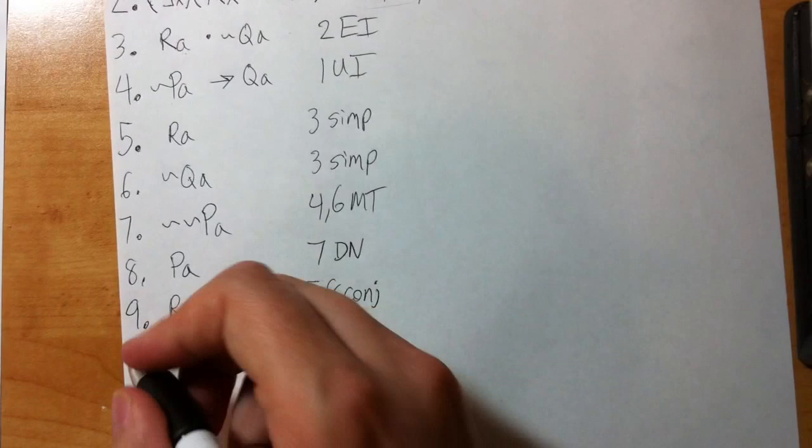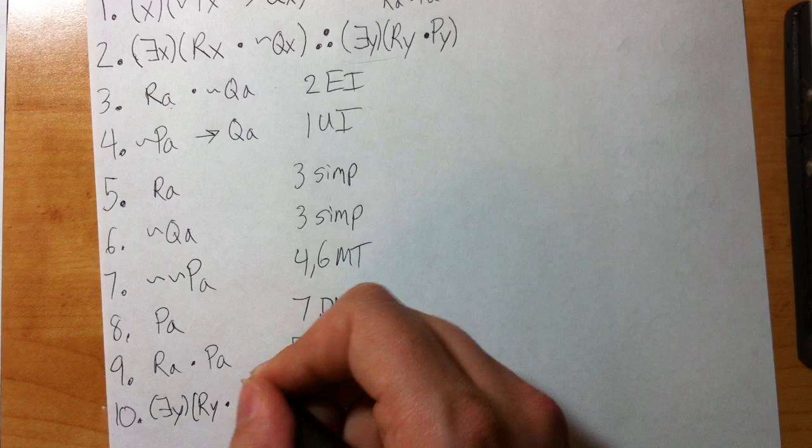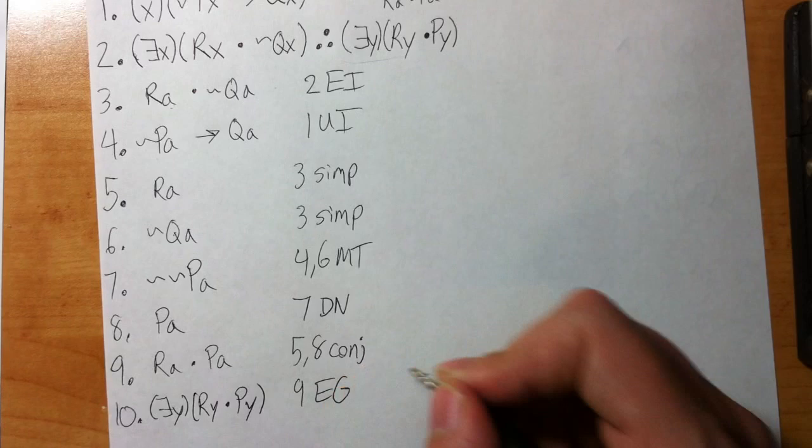So now I can write, to get that instance: Ra dot Pa, and that's line five and eight conj. And so now, using EG, I can finally get my conclusion. You can pick any variable you want, but again, I pick y because that's the one that's given to me in the conclusion.